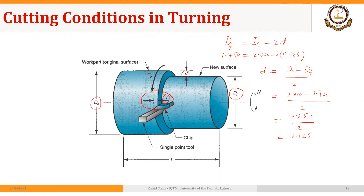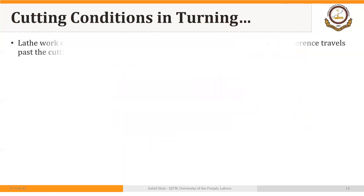A very important process parameter discussed in the previous session is the cutting speed. This is the distance the cutting tool moves on the periphery of the workpiece per minute — expressed in feet per minute or meters per minute. This value can be found from the machinery handbook and then converted into spindle RPM, which is what we set on the machine.